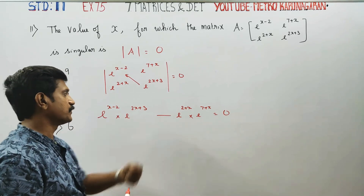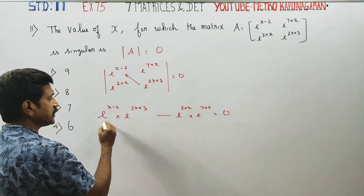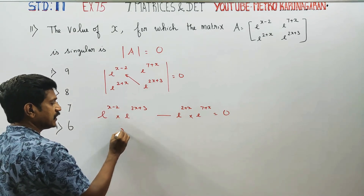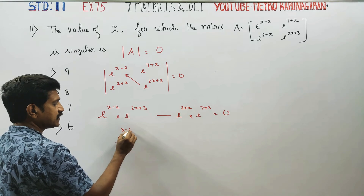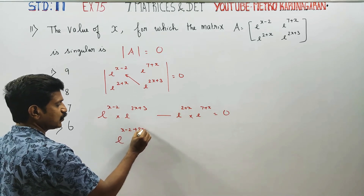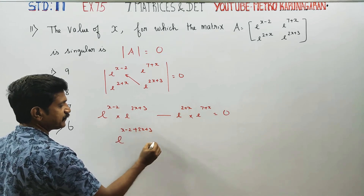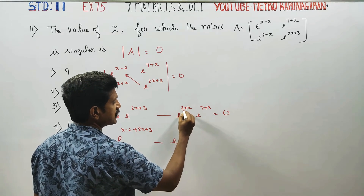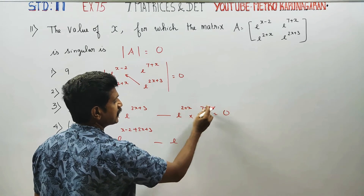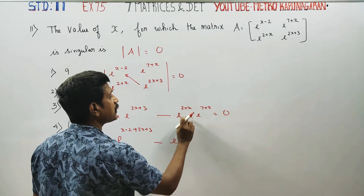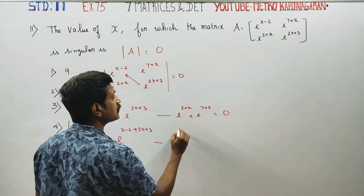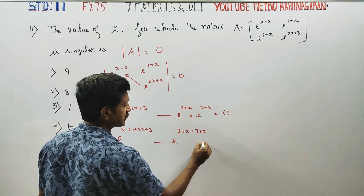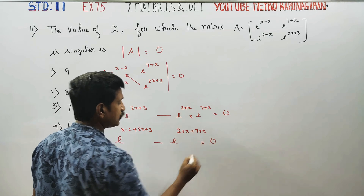This is a 2 by 2 determinant simplification. When bases are the same, powers will add. So: x minus 2 plus 2x plus 3, minus e power (2 plus x plus 7 plus x), is equal to 0. That gives e power (3x plus 1) minus e power (2x plus 9) equals 0.